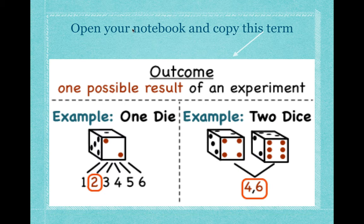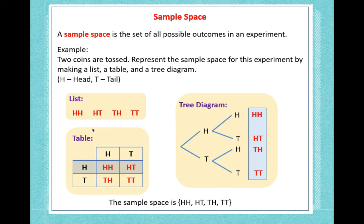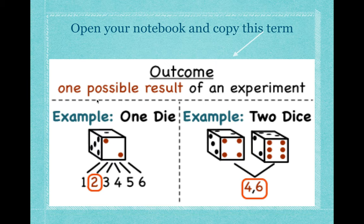The next thing we need to know is what an outcome is. Write down 'outcome' — it's one possible result of an experiment. For example, if we roll a die and we roll two, this is our outcome. If we roll two dice and we get four and six, this is our outcome. A sample space shows all the possible outcomes, and an outcome is just one possible result. Please pause this lesson and write this down.